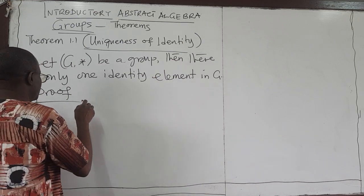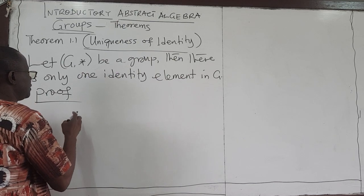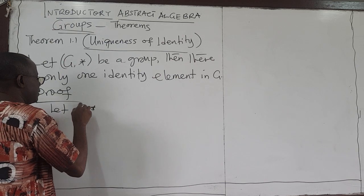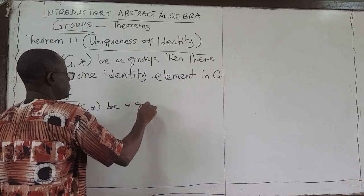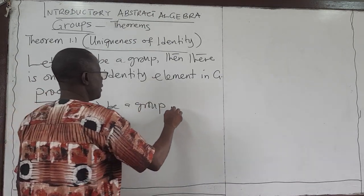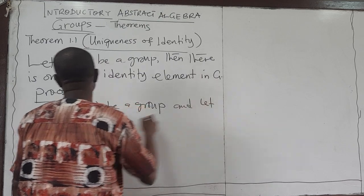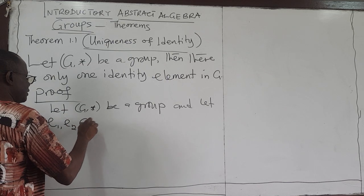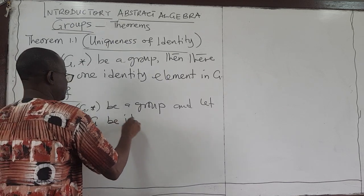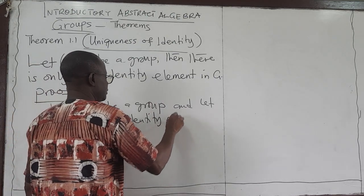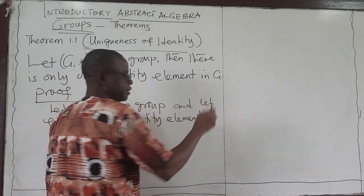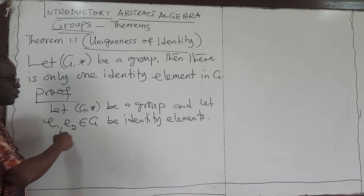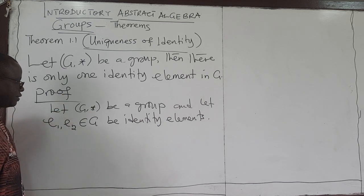That is how you prove uniqueness. We want to show that if G is a group and there is an identity element, there is only one identity element. To prove it, we let G be a group — that is given to us — and we let E1 and E2, which are in G, be identity elements. We are supposing that there are two of them, and I want to show that they are equal. If they are equal, then the identity is unique.